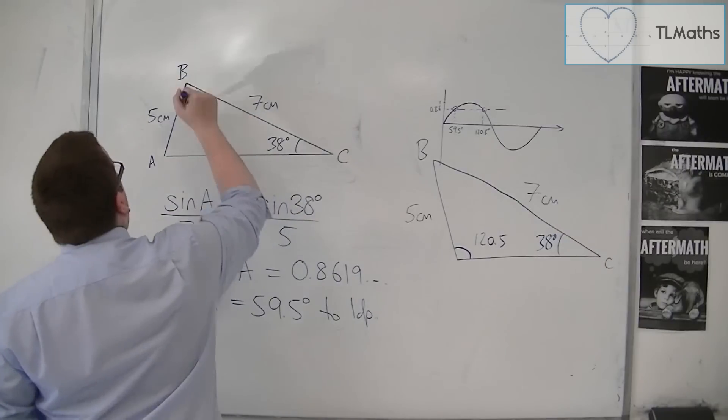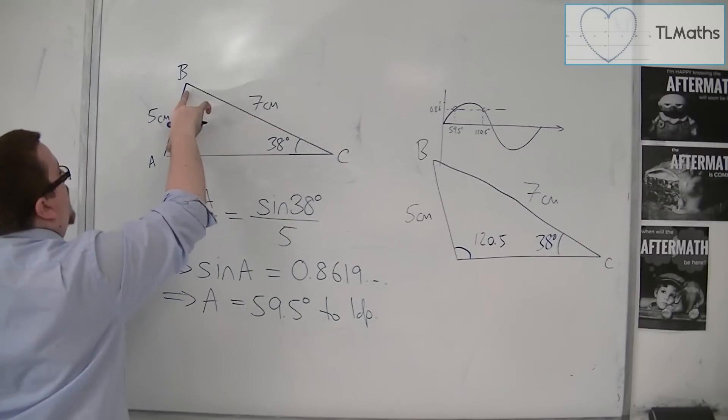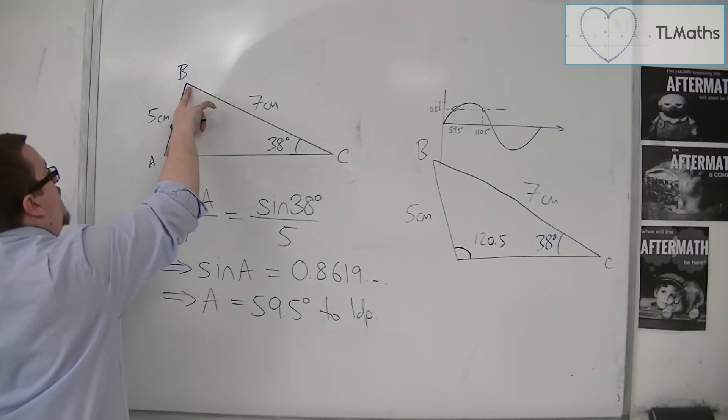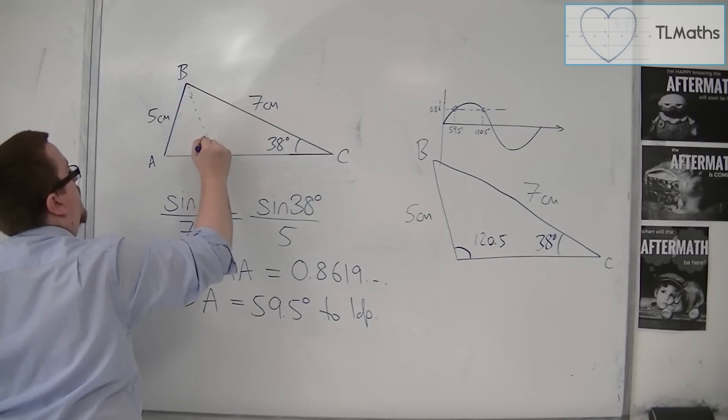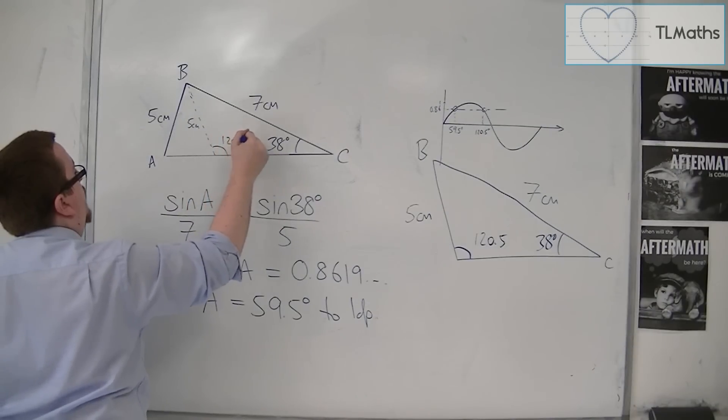It's kind of like thinking if I'm going to have that length, and then in order to maintain that length, it would have to go there instead. And so I could draw it, that is 5 centimetres, and that is the 120.5 degrees.